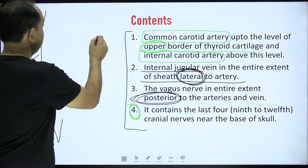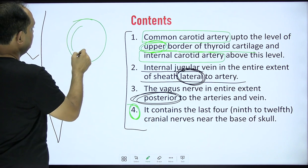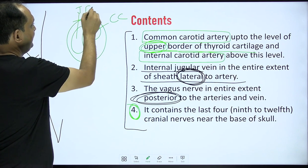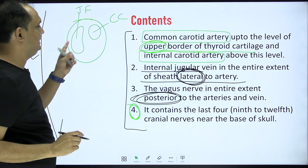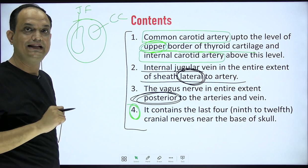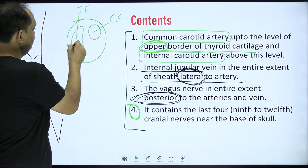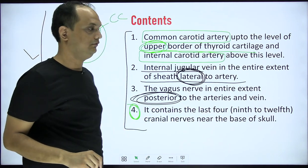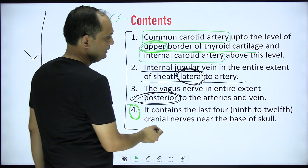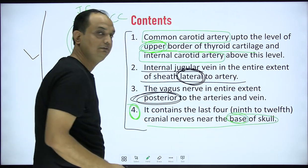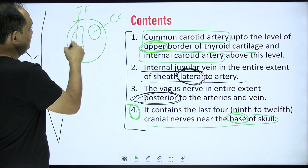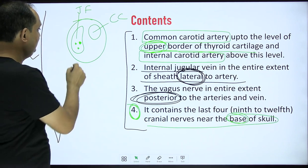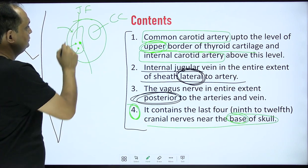The upper attachment of the carotid sheath encloses two foramens: the carotid canal and the jugular fossa. The carotid canal allows entry of the internal carotid artery, and the jugular fossa allows exit of the internal jugular vein. The jugular fossa is also the exit for not only the 10th cranial nerve but also the 9th and 11th cranial nerves. The last four cranial nerves — 9th, 10th, 11th, and 12th — are present near the base of the skull, so at the upper part of the sheath, these nerves are entering.